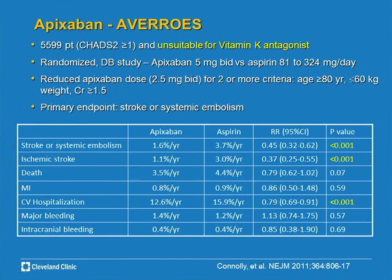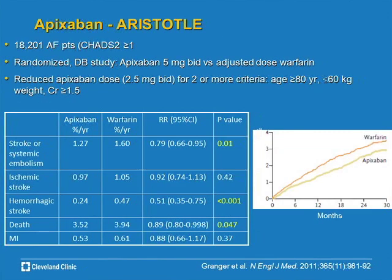Then we studied apixaban head to head against warfarin in the ARISTOTLE trial. We found that the risk of stroke or systemic embolization was lower than warfarin, the risk of hemorrhagic stroke was much lower than warfarin, and the risk of death was lower than warfarin. Similar to the previous two drugs — slightly better than warfarin with a lower risk of intracerebral bleeding.